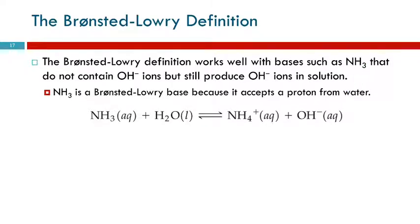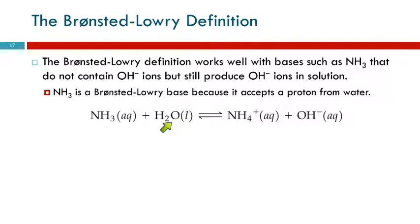Ammonia, NH₃, is a base, but it doesn't work well with the Arrhenius definition because it has no hydroxide ions. When you put ammonia in water, water acts as an acid and donates a hydrogen ion to the ammonia, creating the ammonium ion. The ammonia acts as the base — the babysitter — accepting the proton. At the end of this reaction we have ammonium ion and hydroxide ion. So now water is acting as the acid, donating a proton to ammonia. The base is the proton acceptor.